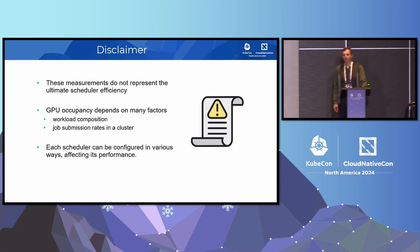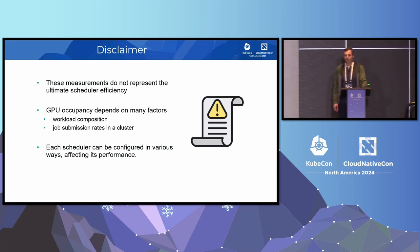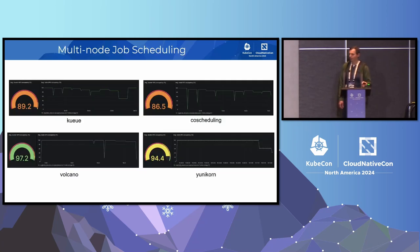Before I share the results, a quick note. The numbers that you will see do not represent the ultimate efficiency of schedulers. The GPU occupancy depends on many factors, such as workload distribution and submission rate. Also, every scheduler can be configured in many ways, which could also affect the results. I should also note that I submitted updated results later, so they are not incorporated in this show.